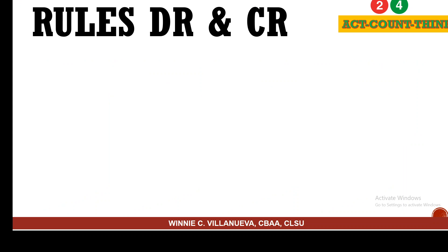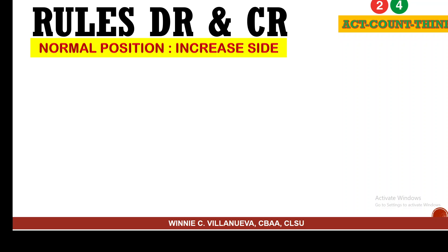Now, if there is a need for us to journalize, it's important to know the rules of debit and credit. We know there are around nine, which is quite a lot to remember. What's the simplest thing we can do? Just think of the normal position. You just have to remember that the normal position is the increased side — that's the normal balance. Just think of your two hands: left and right.